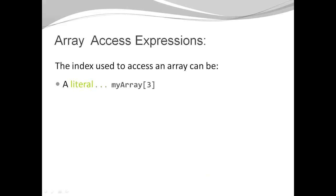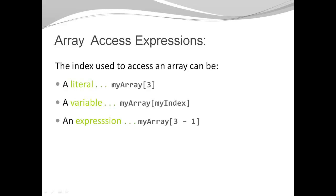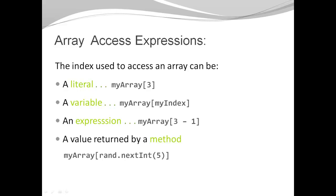The array name plus rectangular brackets and the index is called an array access expression. You can use all kinds of different ways to specify the index. You could use a literal, like myArray[3]. You could use a variable, like myArray[myIndex], where myIndex is an integer variable with value zero, pointing to the first element. You could use an expression like three minus one, or a method that returns an integer, like rnd.nextInt(5), which gives a random number between zero and four. The important thing is to stay within the valid range: zero to the number of elements minus one.